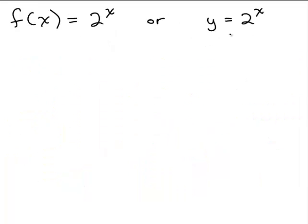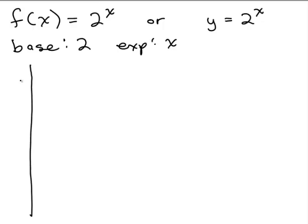So let's look at this function: f of x equals 2 to the x. And of course, remember you could write f of x as y equals 2 to the x. If you want to identify the base and the exponent, the base would be 2 and the exponent would be x. Now, what you can do to graph it is plug in a bunch of ordered pairs, and notice that we can always put any number we want in for the exponent, so x can be any number at all.